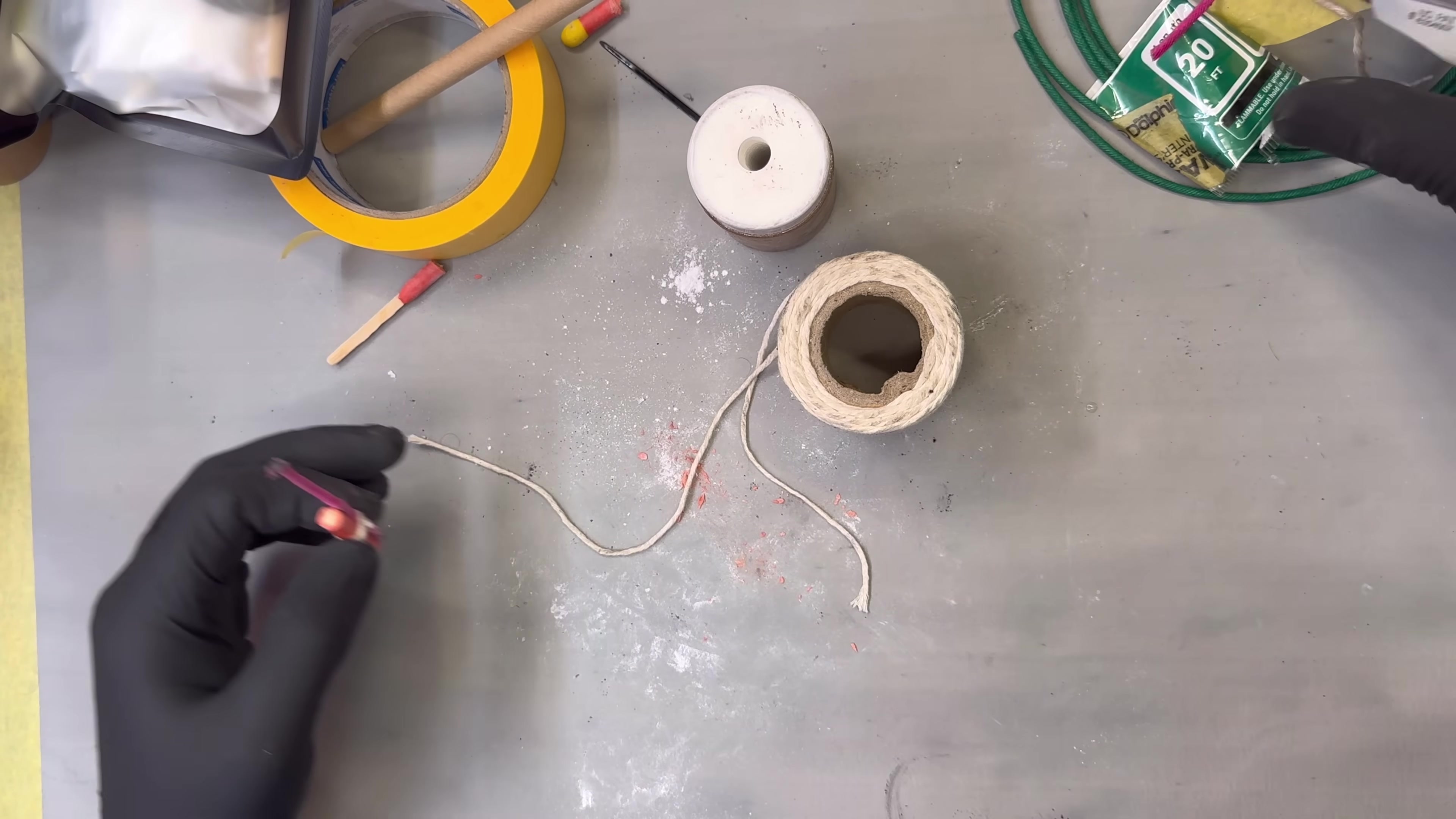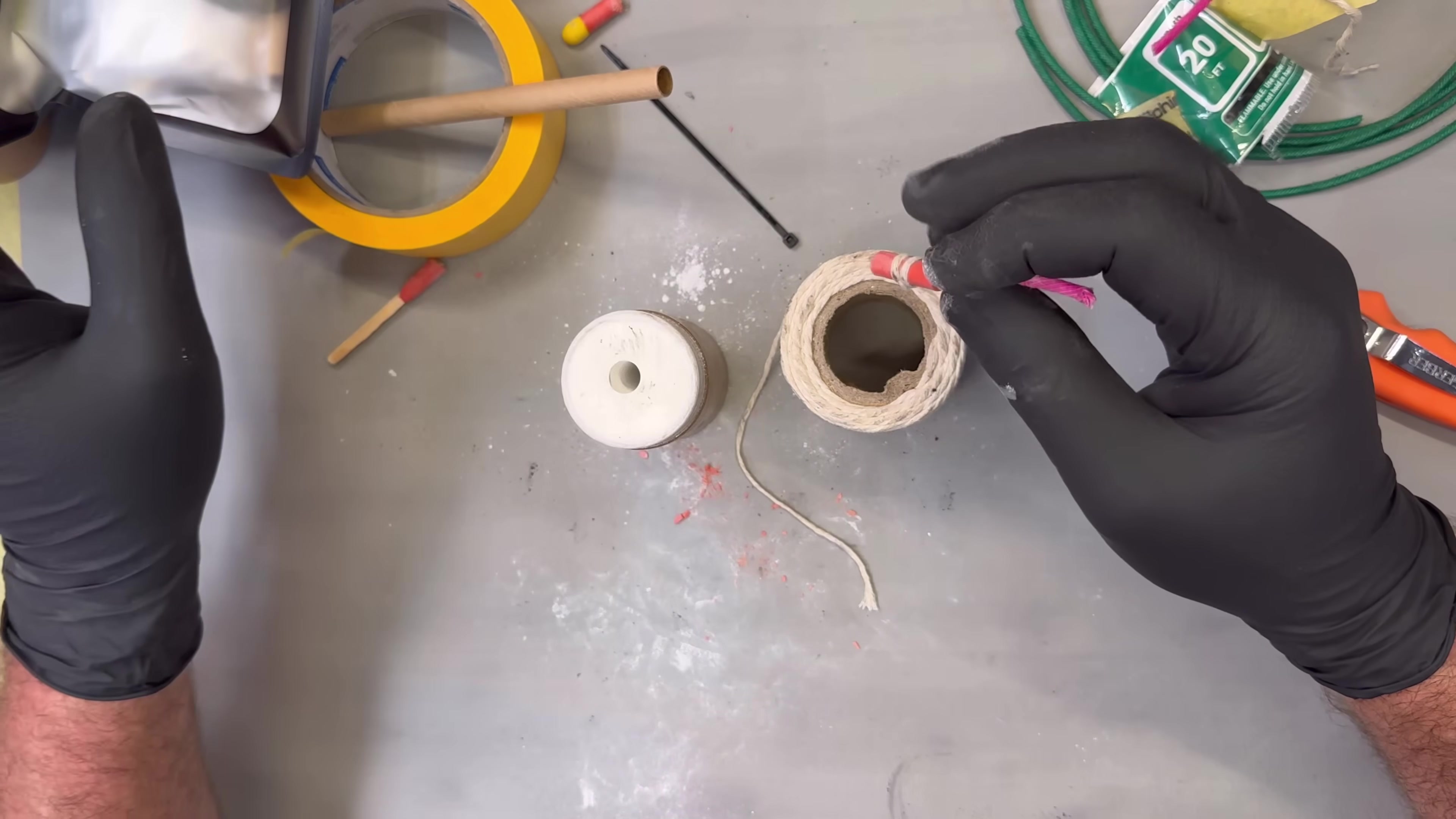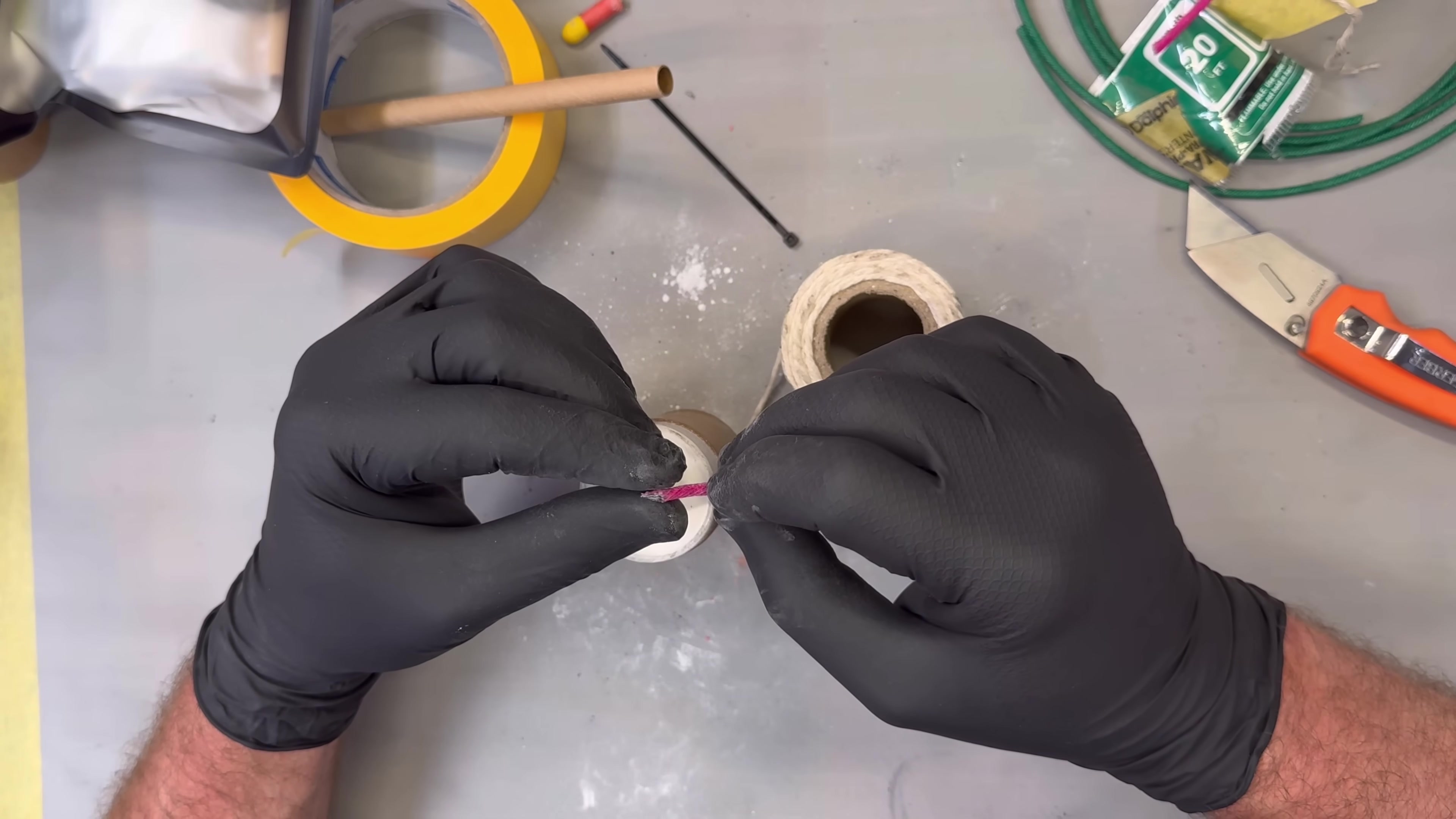Here's what we got. Now, the igniters, these pull wire pull igniters, they are adequate for igniting visco fuse without primer a lot of times.